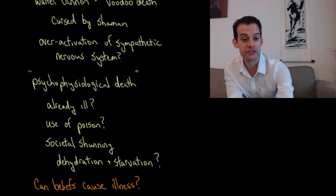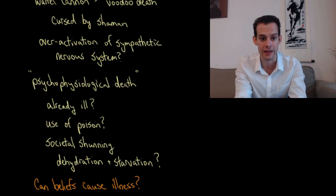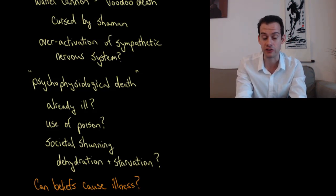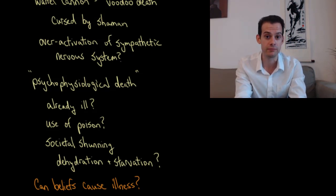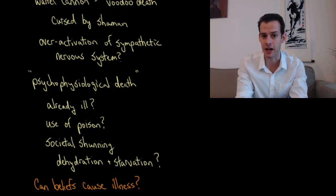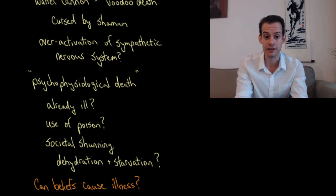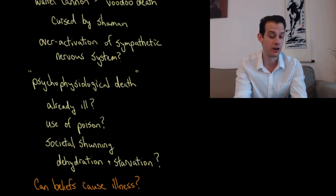There are other possible explanations for this psychophysiological death — a term that avoids the cultural insensitivity of 'voodoo death.' Maybe the shaman cursed someone who was already ill, so the person died from the illness rather than the psychological aspects of being cursed. Or maybe the shaman used poison, which would cause death and also convince others of the shaman's power. Or the cursed person might be shunned by the rest of society, and in a small tribe where you depend on others for survival, being shunned raises your chances of death from dehydration or starvation.